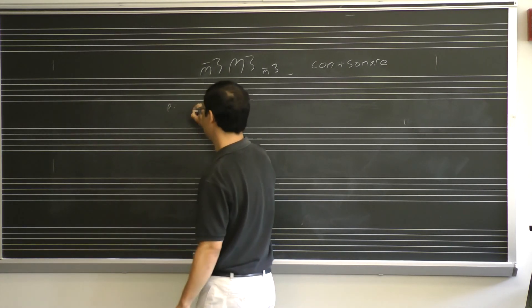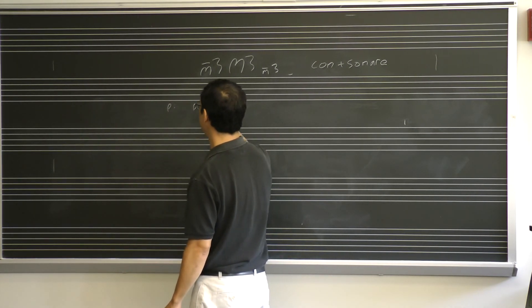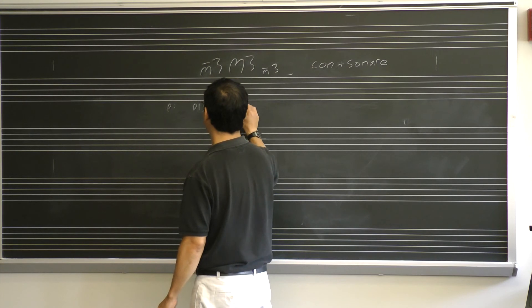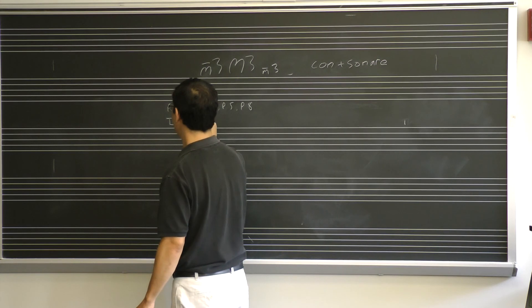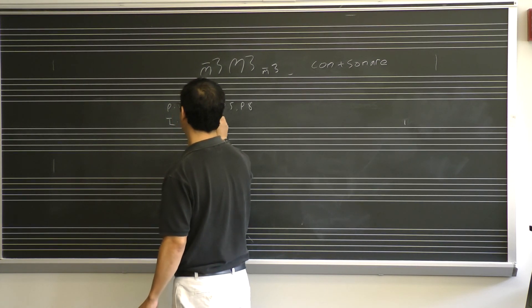So my perfect consonances: perfect unison, perfect fourth, perfect fifth, perfect octave. My imperfect consonances: major and minor thirds,